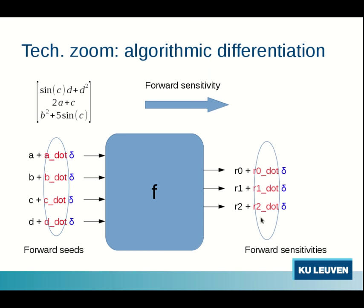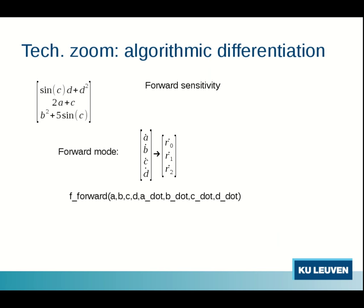So in general we can call these multipliers for some perturbation the forward seeds and the result, the way in which the outputs are perturbed, this vector is called the forward sensitivities themselves. So what we can actually do is construct out of the original f a new algorithm which I call here f underscore forward. And the new algorithm has more inputs. It has the original a, b, c, d but it also has dot inputs a dot, b dot, c dot, d dot.